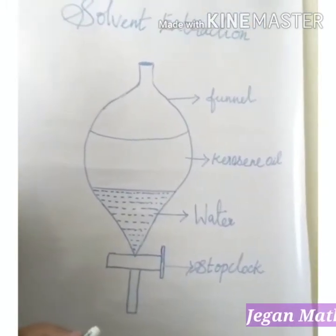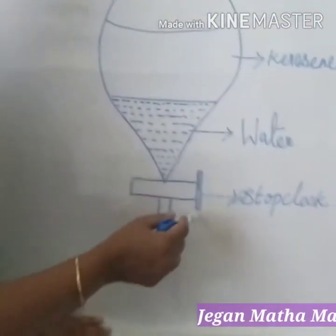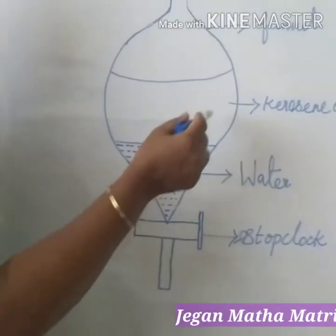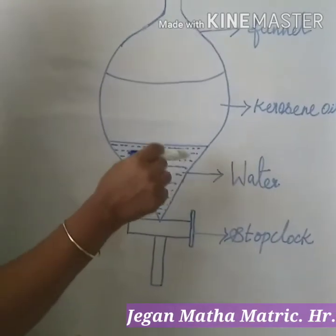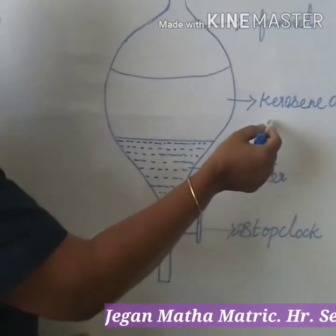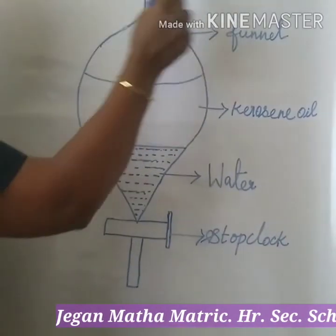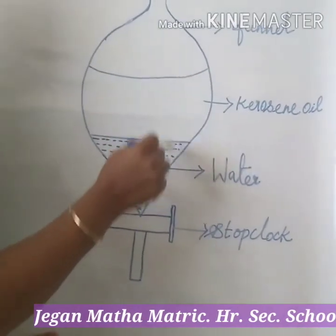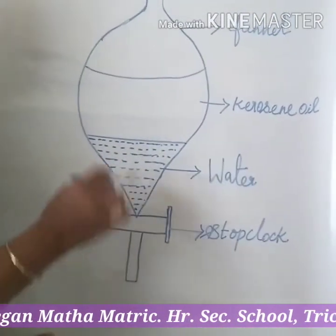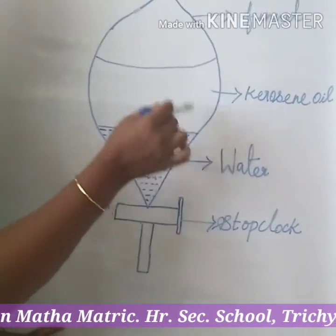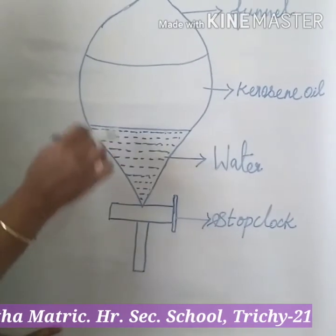For example, a mixture of water and oil. This is the separating funnel, which is attached to a stopcock. The funnel is filled with two immiscible liquids — water and kerosene oil. These two liquids cannot be mixed. In the separating funnel, the kerosene and water are separated, so the mixture of water and oil can be separated by this process.